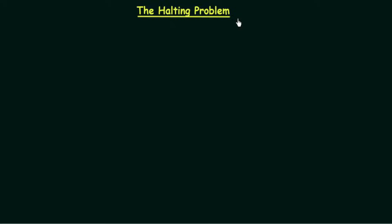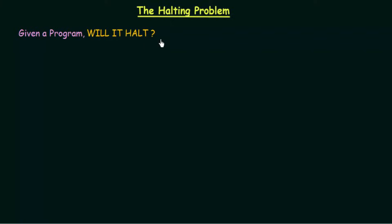First, let's see what the halting problem is. The halting problem asks: given a program, will it halt? It is a question asking whether a given program will halt or not. Halting means that the program will either accept and halt or reject and halt, and it will never go into a loop.